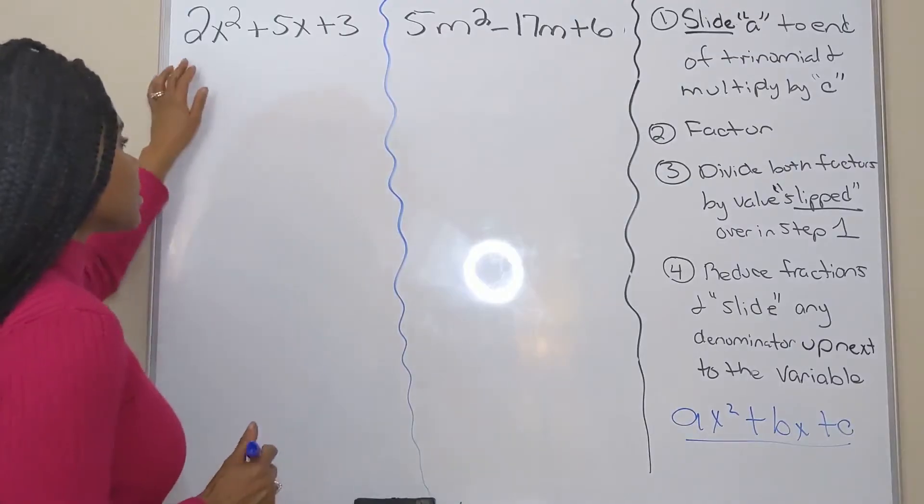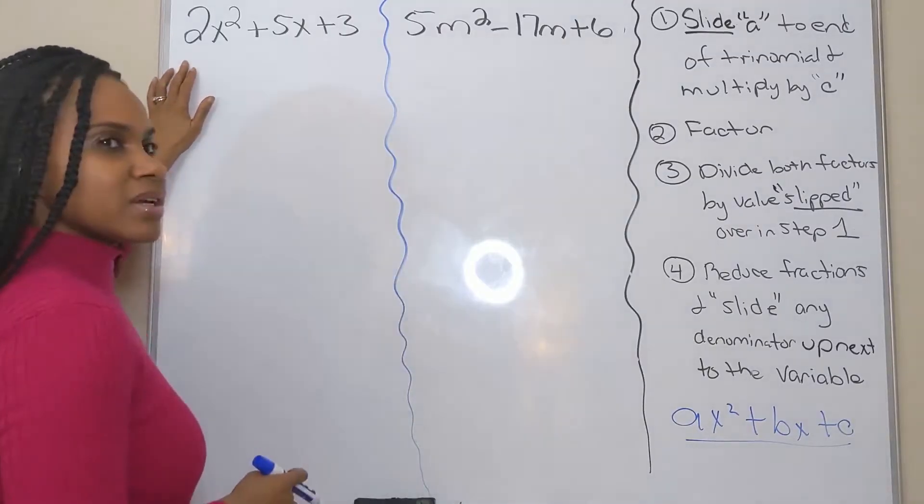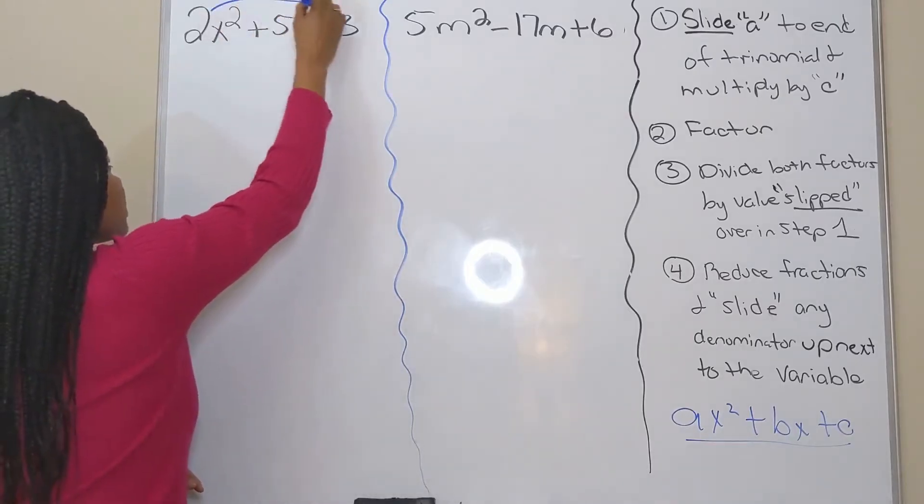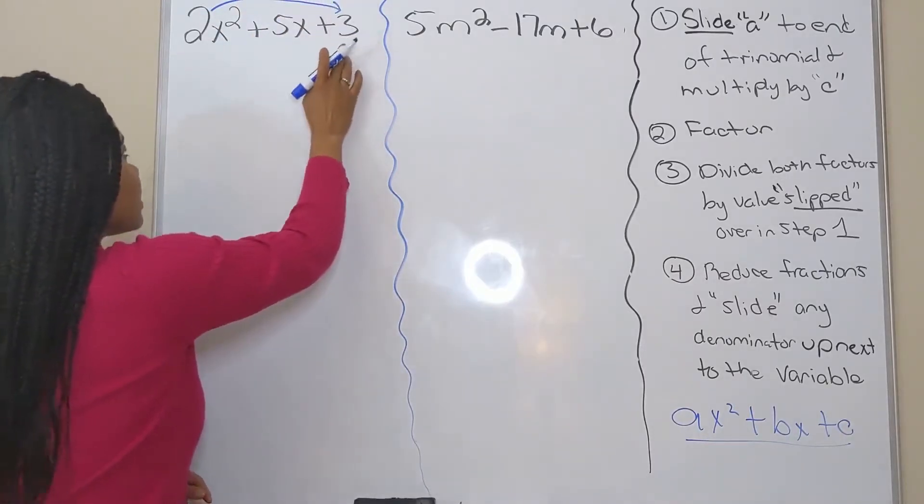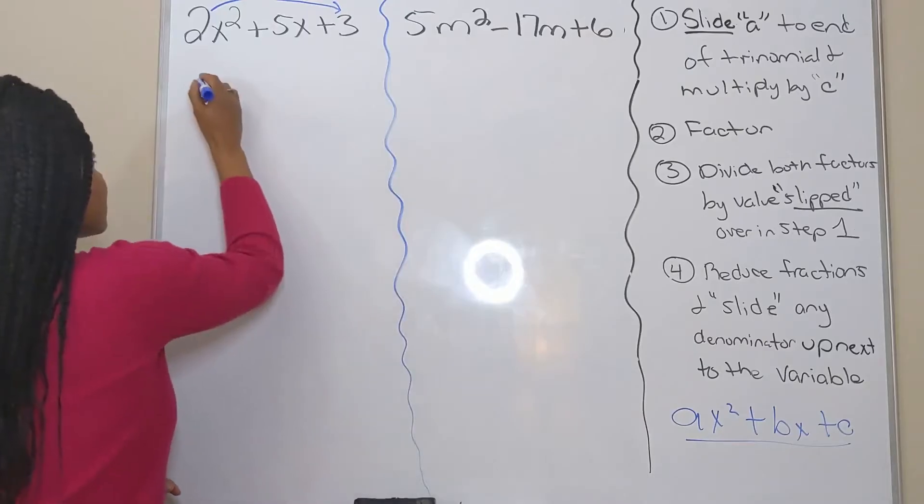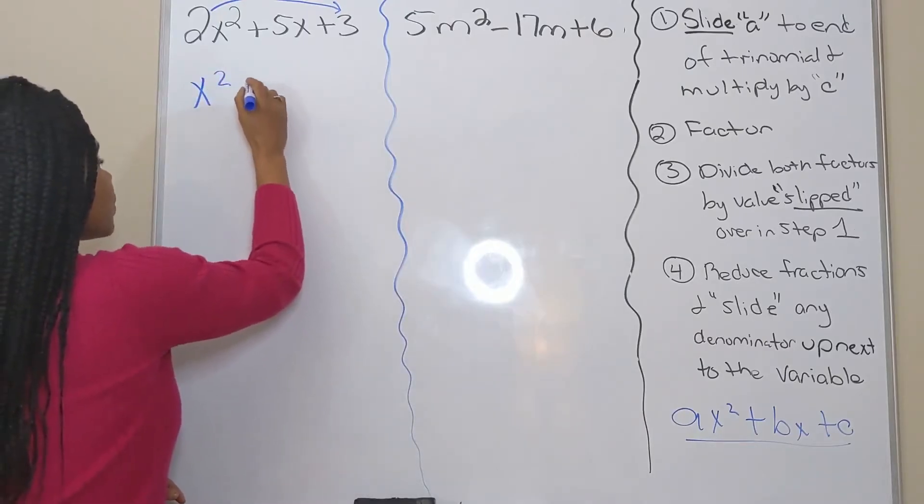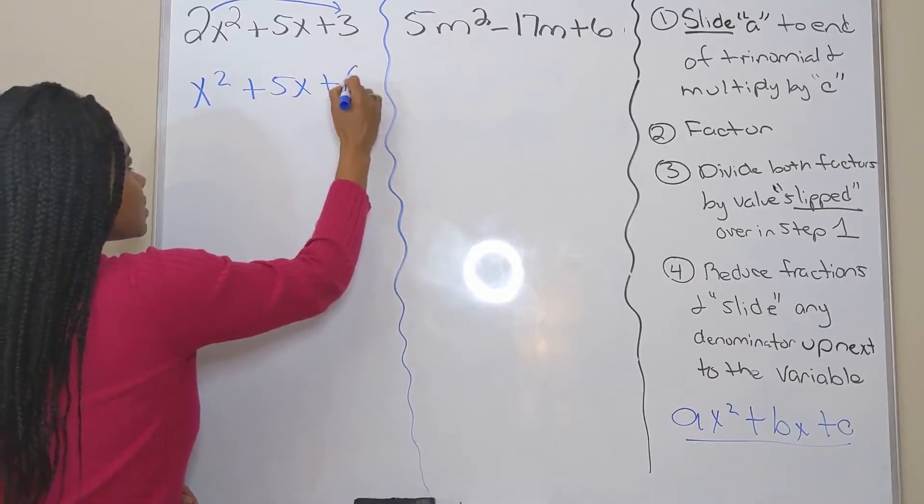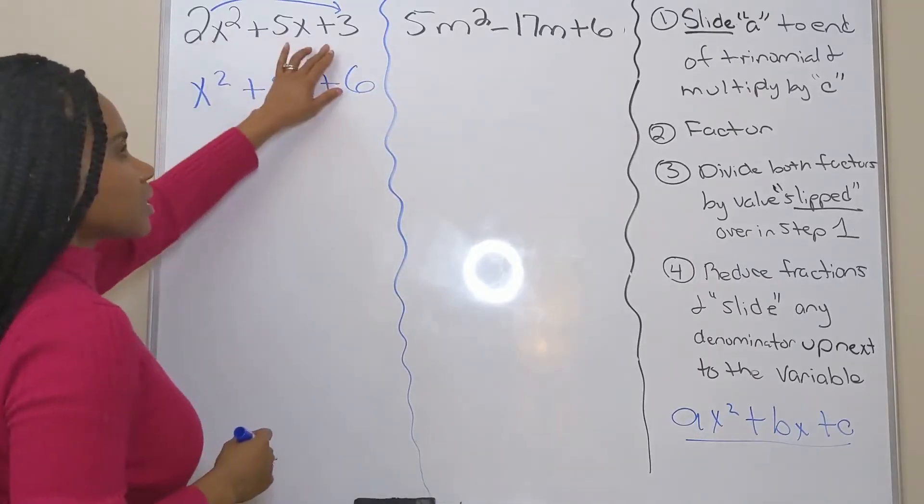All right, so my first step, slide a over to the end and multiply by c. I want to slide two over and multiply by three. So two times three is six. So I'm left with x squared plus five x plus six. So I slid it over.